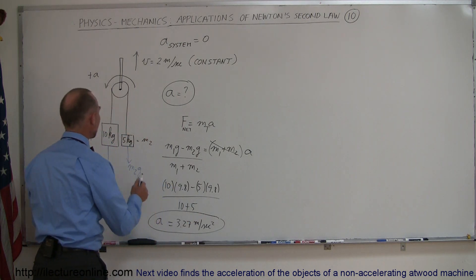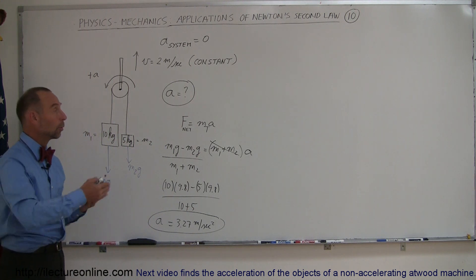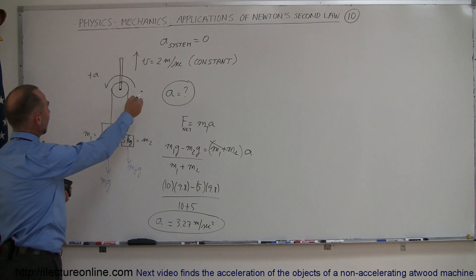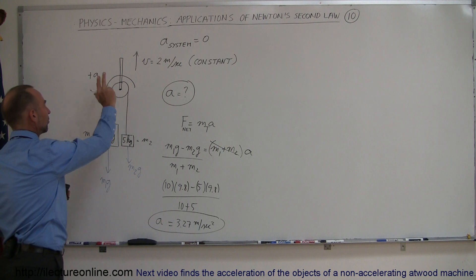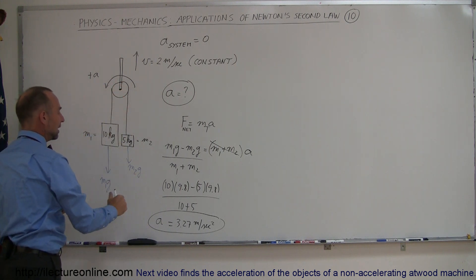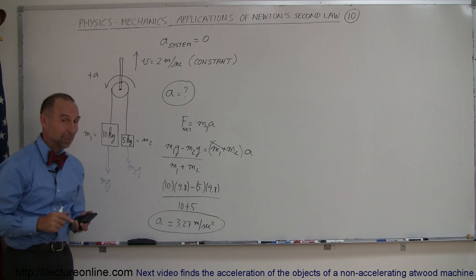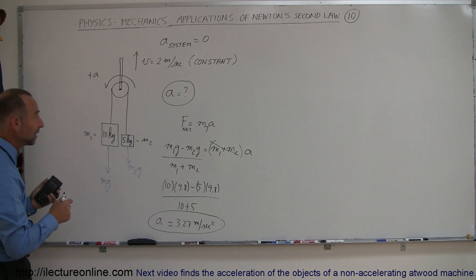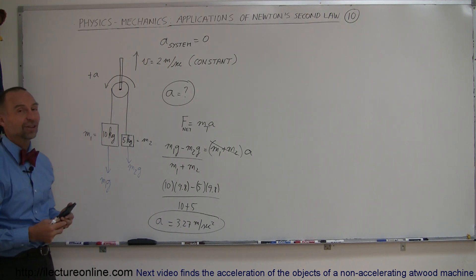So if we have a situation where we have an Atwood machine that's being lowered or raised at a constant speed, we can ignore all that just as if it's stationary and the answer we get is exactly the same. But on the next example, we're actually going to make this accelerate and see how that changes things.